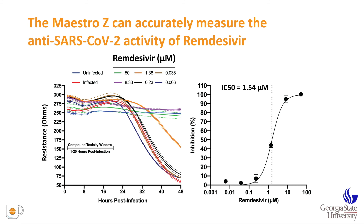We next asked how the Maestro-Z would perform to measure antiviral activity of the known SARS-CoV-2 antiviral remdesivir, which is being used to treat COVID-19 patients. We infected cells at a multiplicity of infection of 1 in 100 in the presence of six concentrations of remdesivir, ranging from 50 micromolar down to 6 nanomolar. The highest concentrations — 50 and 8.3 micromolar — fully blocked replication. At 1.38 micromolar there was partial protection, while lower concentrations were not inhibitory. We converted the data to percent inhibition and determined an IC50 of 1.5 micromolar, essentially the same as determined in other assays for SARS-CoV-2 in Vero cells.